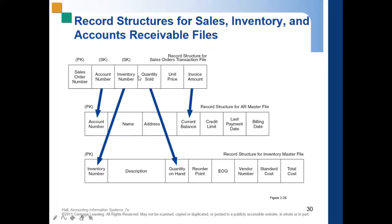In the sales order, your primary key is the sales order number — it is unique for that specific type of file or for the sales order file. Now, the other data available can also be used for other files, either as primary or as secondary keys. For instance, the account number is a secondary key in your sales order.